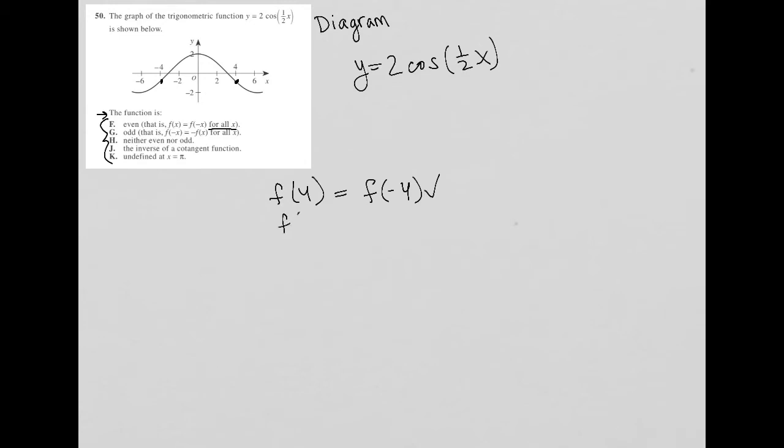So let's try f of 2. Does f of 2 equal f of negative 2? Well, let's see. f of 2 is here, f of negative 2 is there. So that also checked out. f of 6 is here, f of negative 6 is here. That also checks out. So I actually like choice F quite a bit.